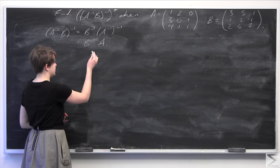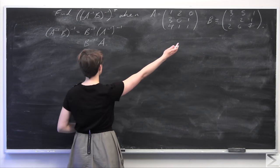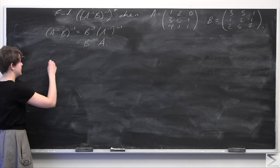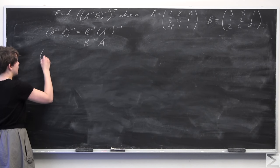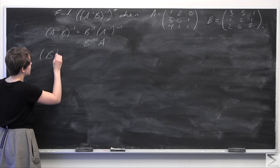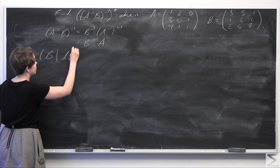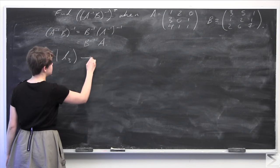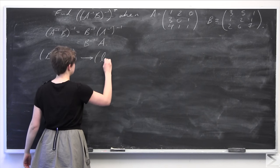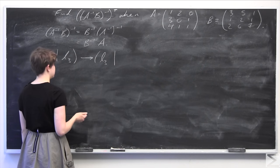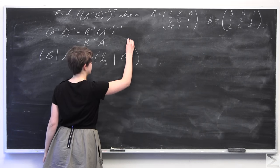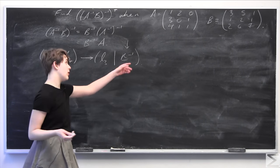We have B, and we know that for matrix inverses done by hand, we can augment B with the 3×3 identity matrix. We can then perform Gaussian elimination on this to transform it into the 3×3 identity matrix on the left-hand side of the augmented matrix, and B inverse on the right-hand side. This is the quantity we want.